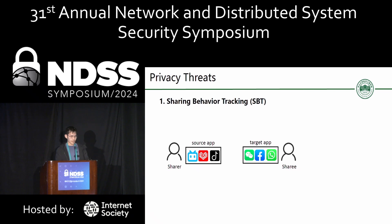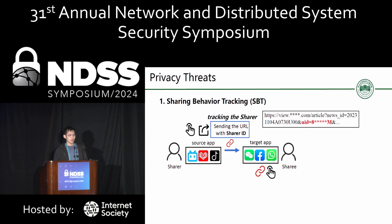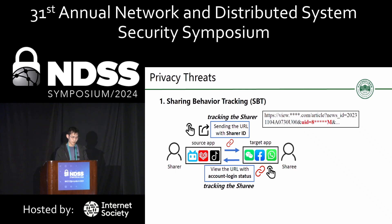The first pattern is sharing behavior tracking. The sharer and sharee are in the source app and the target app respectively. First, the sharer clicks the share button. Then the source app sends the corresponding URL of the shared content to the target app. However, the source app incorporates the sharer's ID into the URL before sending it. In this way, the source app achieves tracking of the sharer by embedding the sharer ID. On the target app side, if the sharee has an active account on the source app and views the URL while logged in, the source app can easily track the sharee and identify which users accessed the shared content. So the source app can track the sharing behavior of the sharer and the viewing behavior of the sharee.